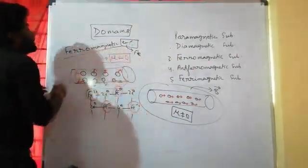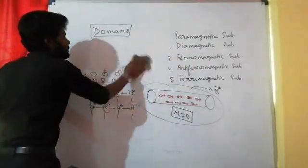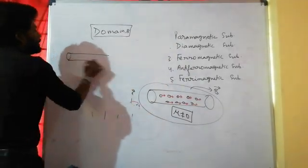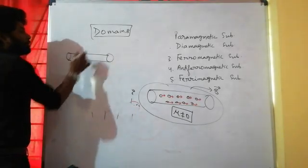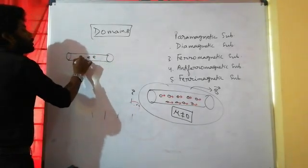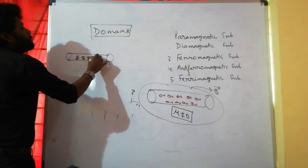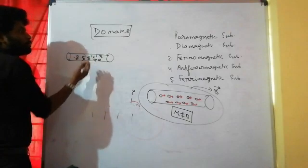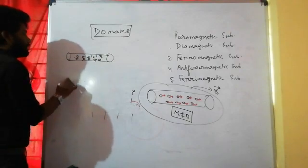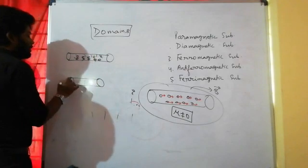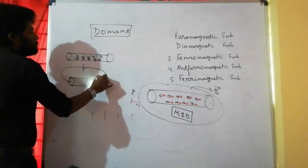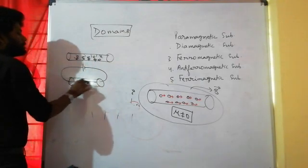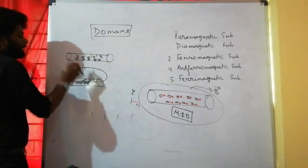This is similar to what we know in the electric field. In the absence of an electric field, electrons move in random directions and the net current is zero. But in the presence of an electric field — when a battery is connected — the electrons move in a particular direction. In the same way, domains behave in the presence of a magnetic field.